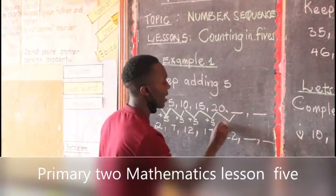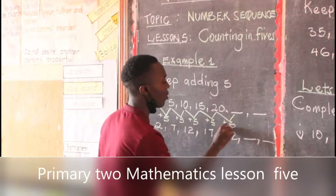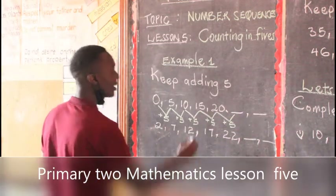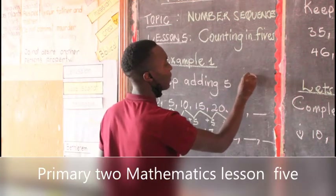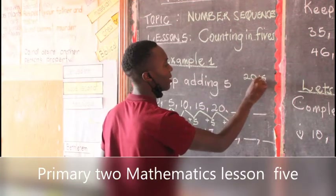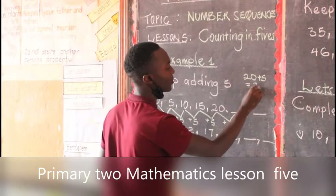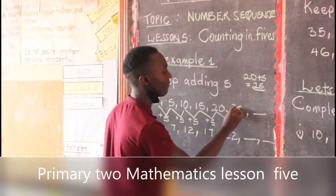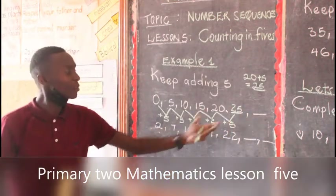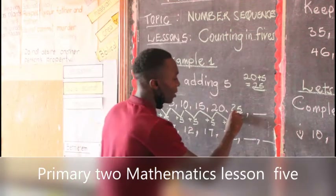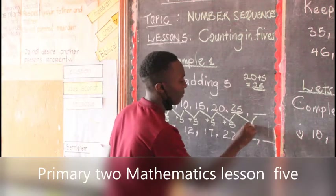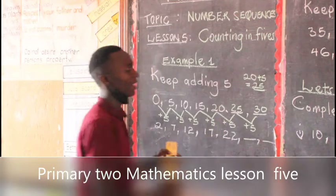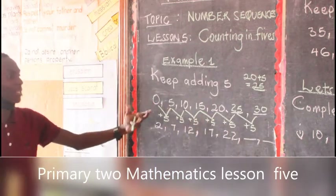Come here and add 5. You get 20 plus 5. I hope you will get 25 as your answer. So you write 25. The next one, again you add 5. So you get 30 as your answer. That is our first example. Let us look at our next example.